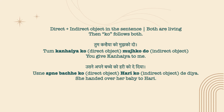When both the direct and indirect objects in a sentence are living, then ko follows both of them. For example: 'Tum kanhaiya ko mujh ko do' — You give Kanhaiya to me. 'Usne apne bacche ko Hari ko de diya' — She handed over her baby to Hari.